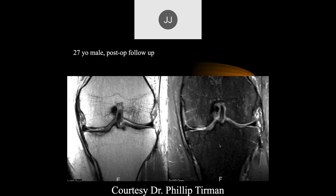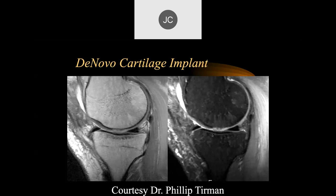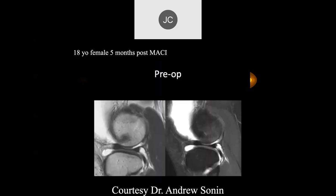A 27-year-old post-op follow-up shows a chondral defect in the medial femoral condyle — maybe a flap with different signal intensity. But actually it looks pretty good — surface looks mostly intact with a little bony abnormal signal and inhomogeneity. This is called a de novo cartilage implant — basically an allograft from other cells. Some of these techniques are not FDA approved in the US, which is why you occasionally hear about athletes going to Australia or Europe for surgery to access newer techniques.